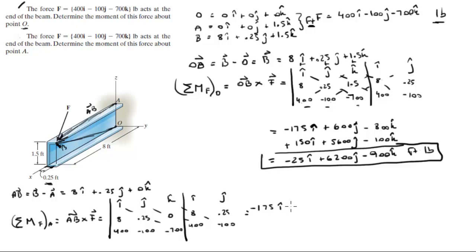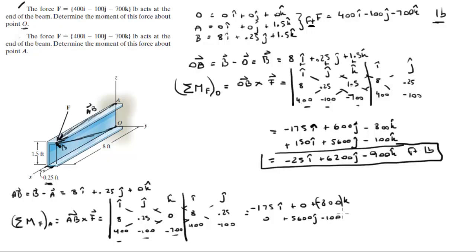Now computing the negative diagonals and combining all terms, the final result is negative 175i plus 5600j minus 900k.